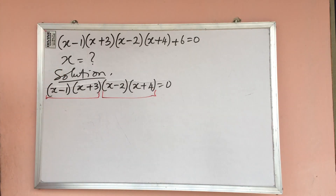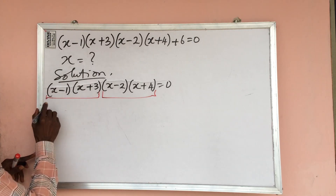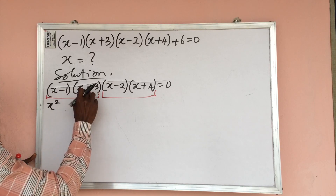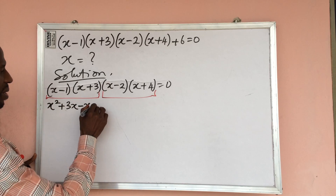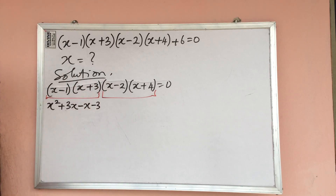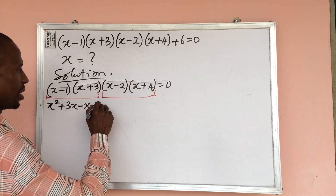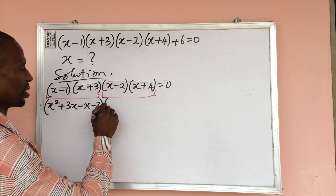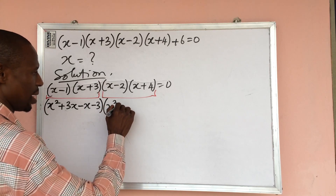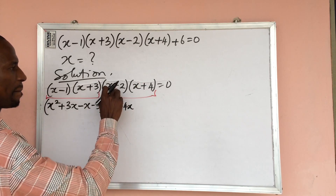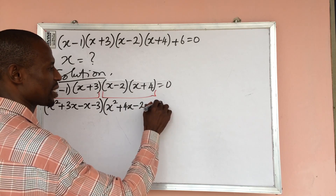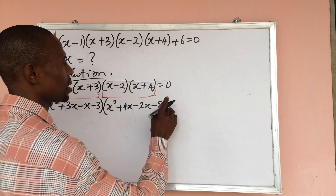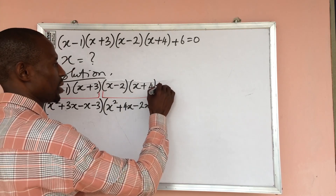Opening the first pair (x − 1)(x + 3): x times x gives x squared, x times 3 gives 3x, minus 1 times x gives minus x, minus 1 times 3 gives minus 3. For the second pair (x − 2)(x + 4): x times x gives x squared, x times 4 gives 4x, minus 2 times x gives minus 2x, minus 2 times 4 gives minus 8. Plus 6 equal to zero.